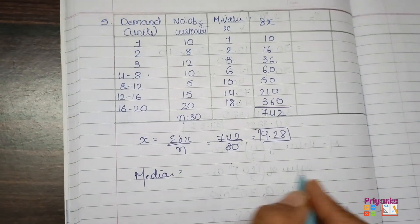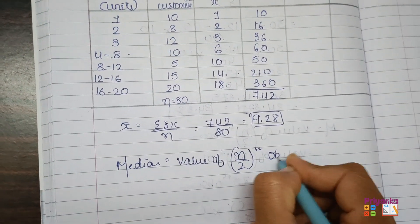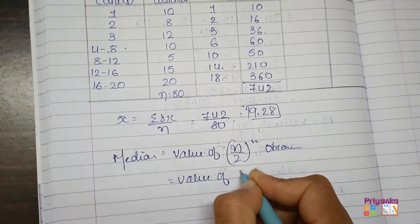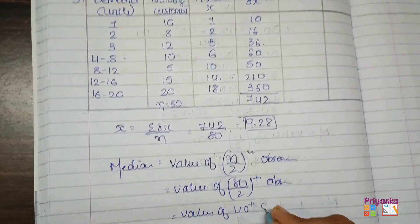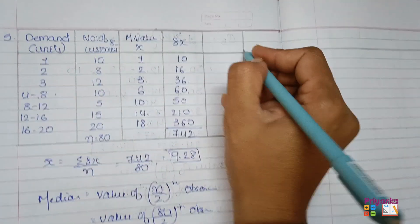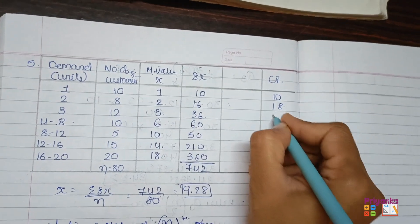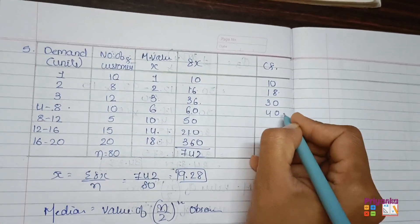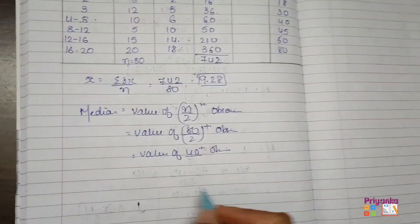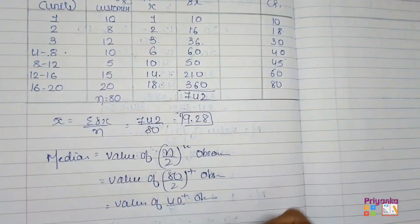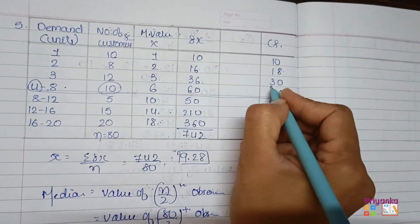Next we find out median. As it is half continuous, we'll use the formula. Get the value of n upon 2. N is 80 upon 2, the observation, and here we get 40. To find out the 40th, we'll find out cumulative frequency. 10, 10 plus 8 is 18, plus 12 is 30, plus 10 is 40. Just continue with the same process. I hope now you can understand how to go with the cumulative frequency.